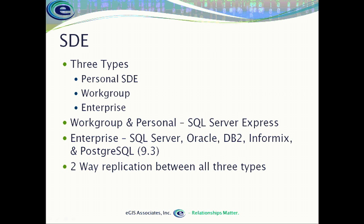All of these types allow for two-way replication between them, so we can expand the use of this into a distributed data model. We may have a core office — a corporate headquarters — which has our centralized enterprise geodatabase. It then feeds out to satellite offices that may have two or three people with workgroup geodatabases, and the workgroup and the enterprise talk to each other, sharing data and replicating changes back and forth.